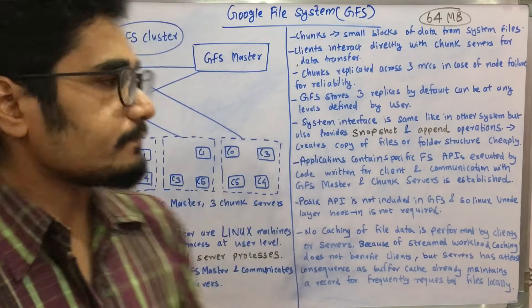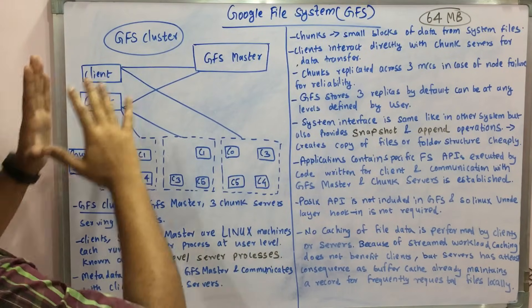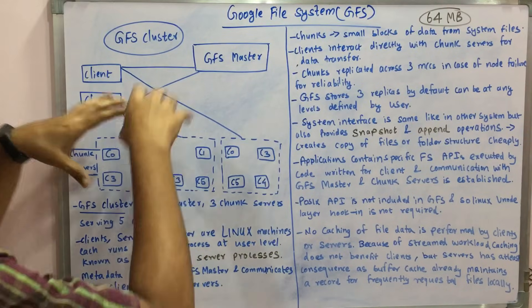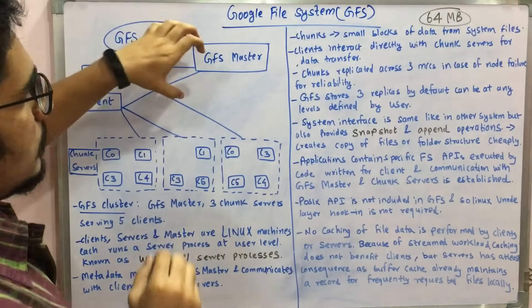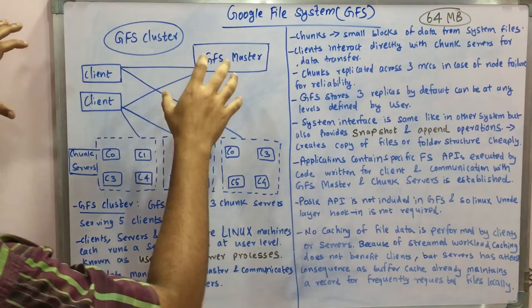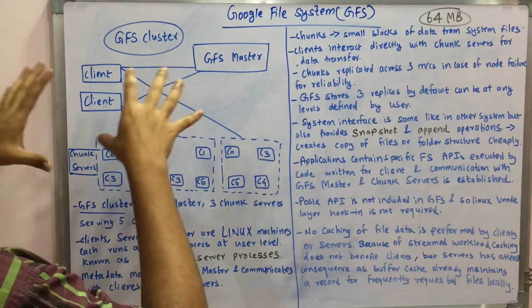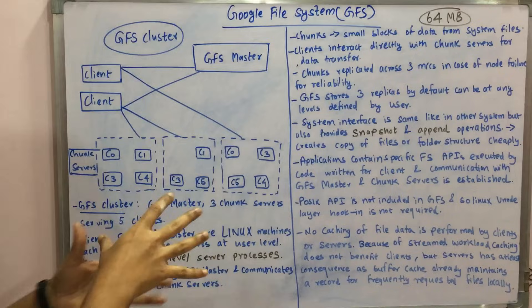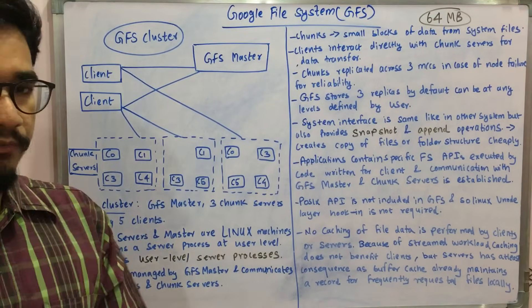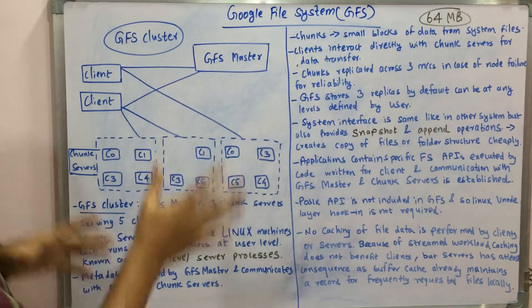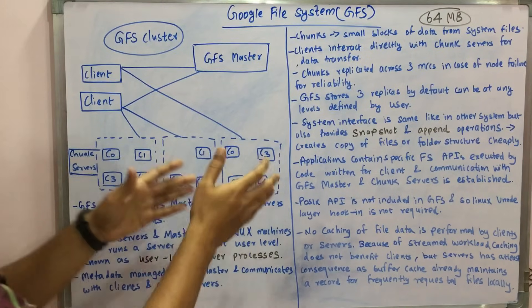In today's video we'll see what GFS is, its various components, and how GFS is formed. Let's focus on this diagram. You can see some components, blocks, and small figures. First, there is a GFS master, which controls the clients and servers. This GFS cluster has a GFS master, three chunk servers, and serves five different lines.